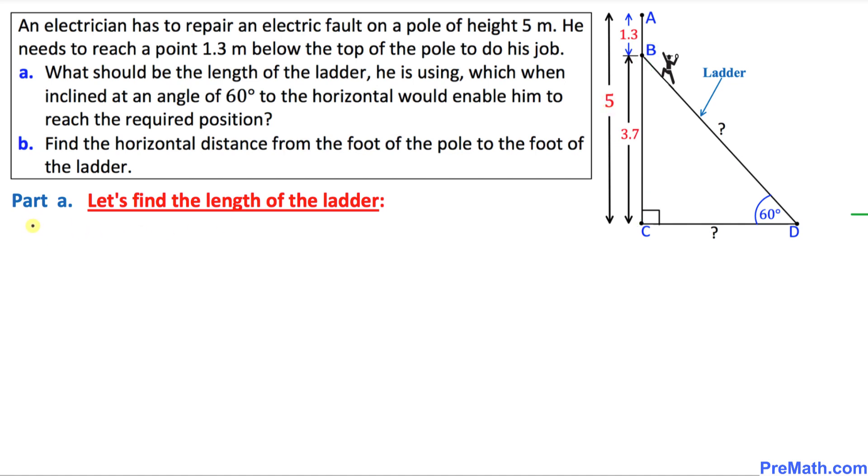Let's get started with triangle BCD. You can see in this triangle BCD, this angle is 60 degrees, that means the opposite side is going to be this one. This is our opposite side. And the longest leg is going to be our hypotenuse.